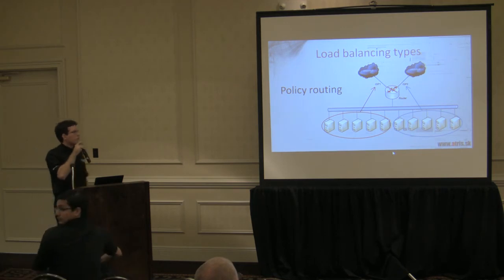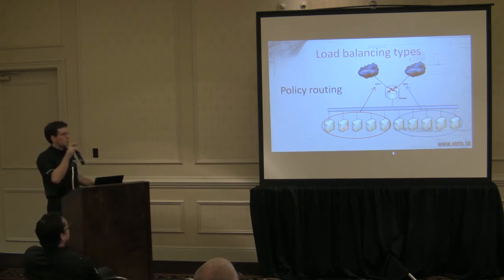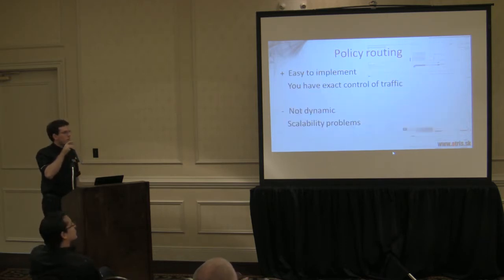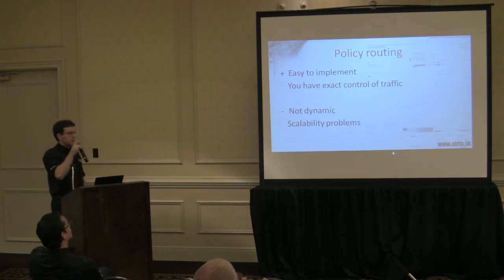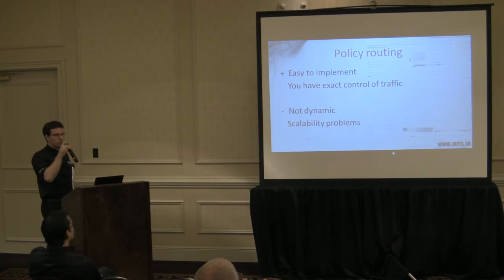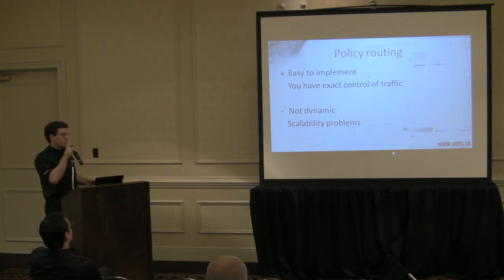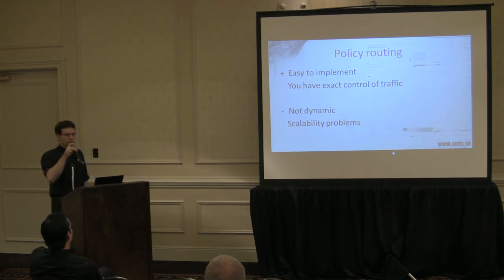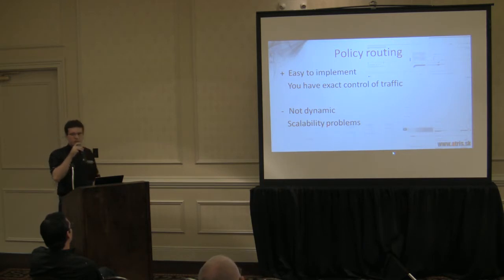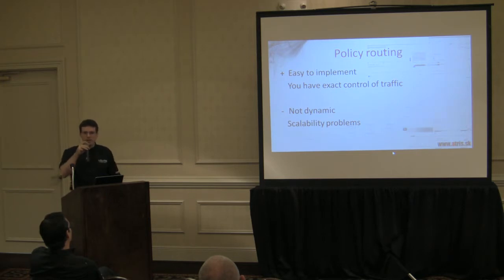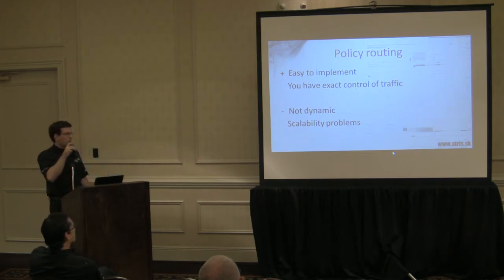You can do policy routing, which basically says this group of machines goes through the ISP1 link, and this group goes through the ISP2 link. It's really easy to implement and you have exact control of your traffic. The problem is it's not dynamic. You have to manually assign which parts of your network go out which ISP, and there are scalability problems because you have to configure everything yourself. If you add a new ISP, you have to reassign a lot of your network to go out of that ISP, and again, it's not dynamic.